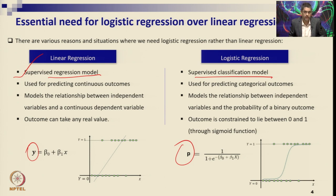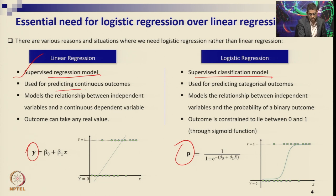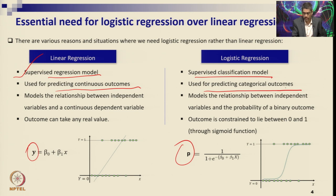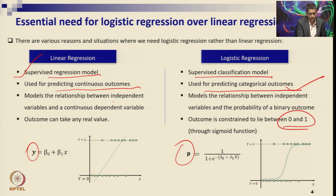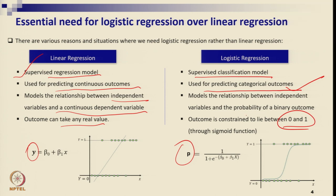In basic regression, y can take any continuous real value — like money, cost, or any number. But in logistic regression, the predicted variable or outcome is categorical, like 0 or 1, yes or no, die or survive, default or not default. In linear regression, the model describes the relationship through the continuous outcome of the dependent variable. In logistic regression, it models the relationship between the independent variables and the probability of a binary outcome.